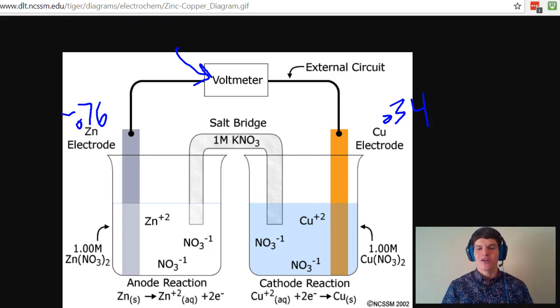Therefore, copper is going to be reduced in this case. And that's what we see down here in this reaction. It looks like copper 2 plus is gaining two electrons. Remember oil rig. RIG, reduction is gain of electrons.